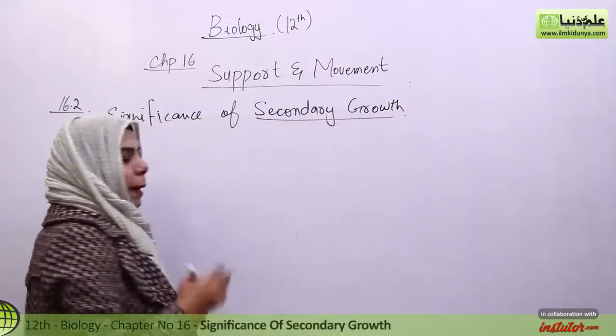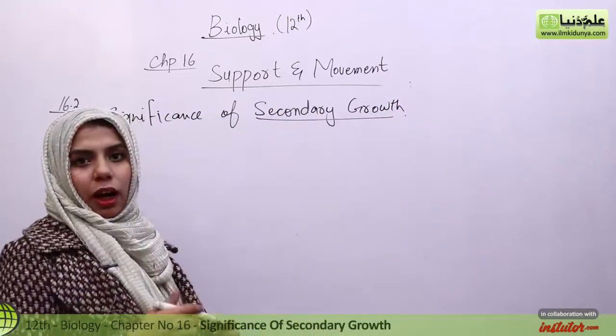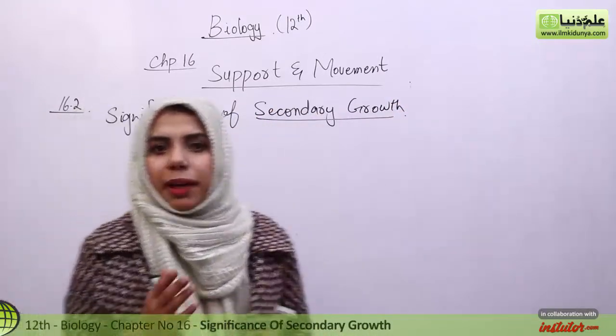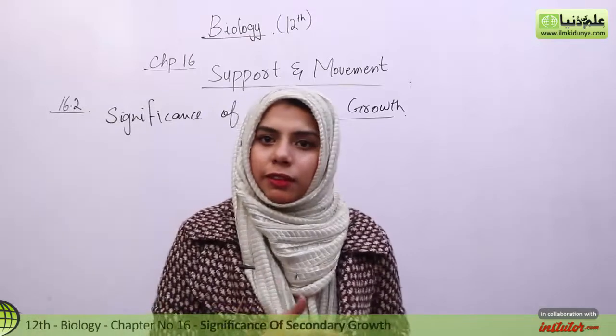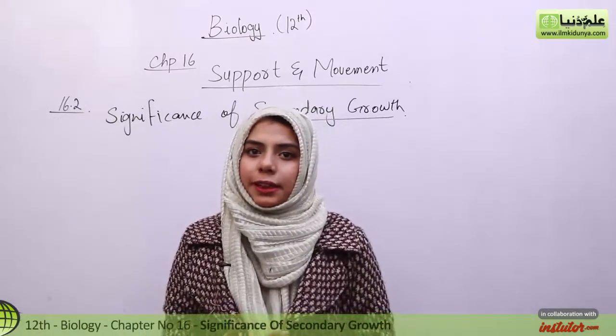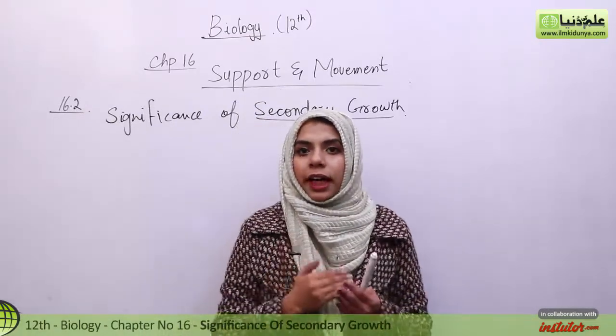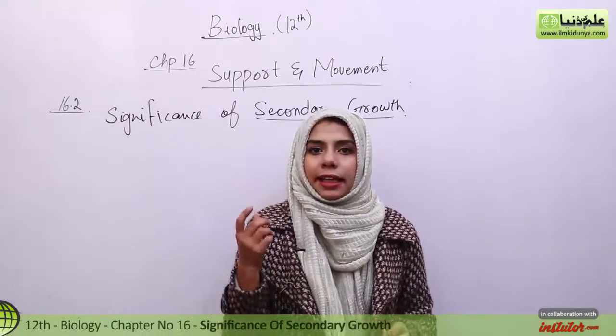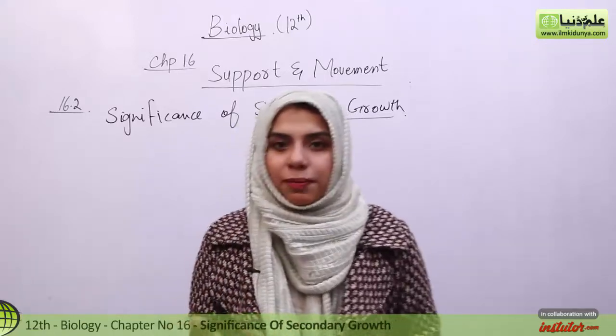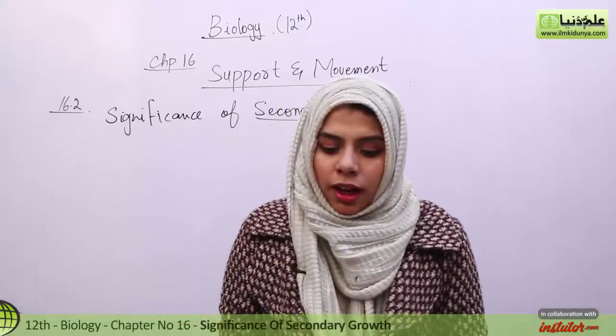There are two types of growth in plants. One is known as Primary Growth, the other one is known as Secondary Growth. So what is primary growth? The increase in the length of a plant is known as Primary Growth.